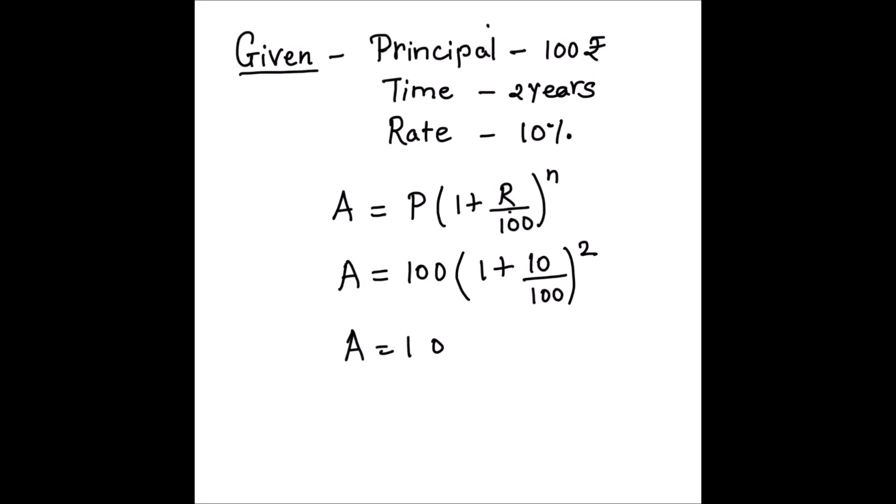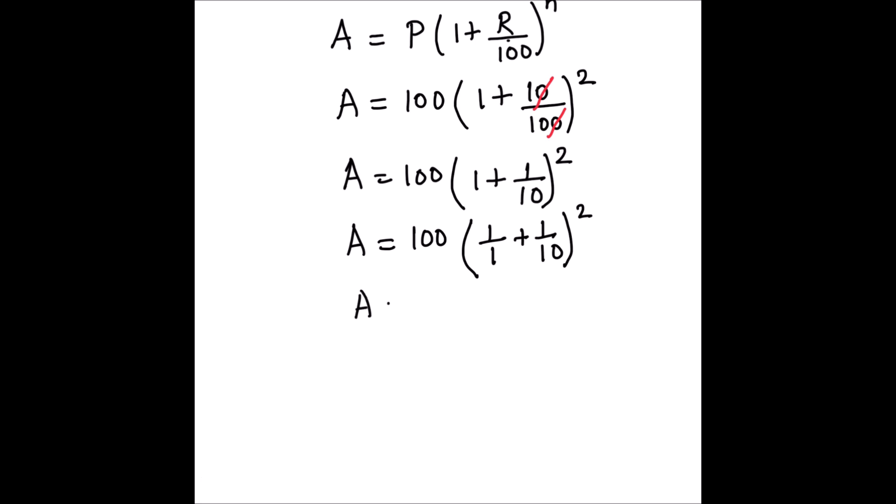A = 100(1 + 10/100)^2. Let's simplify this: 10 upon 100, this 0 and this 0 get cancelled, so we will write 1 upon 10 whole square. A = 100 times (1 + 1/10)^2.